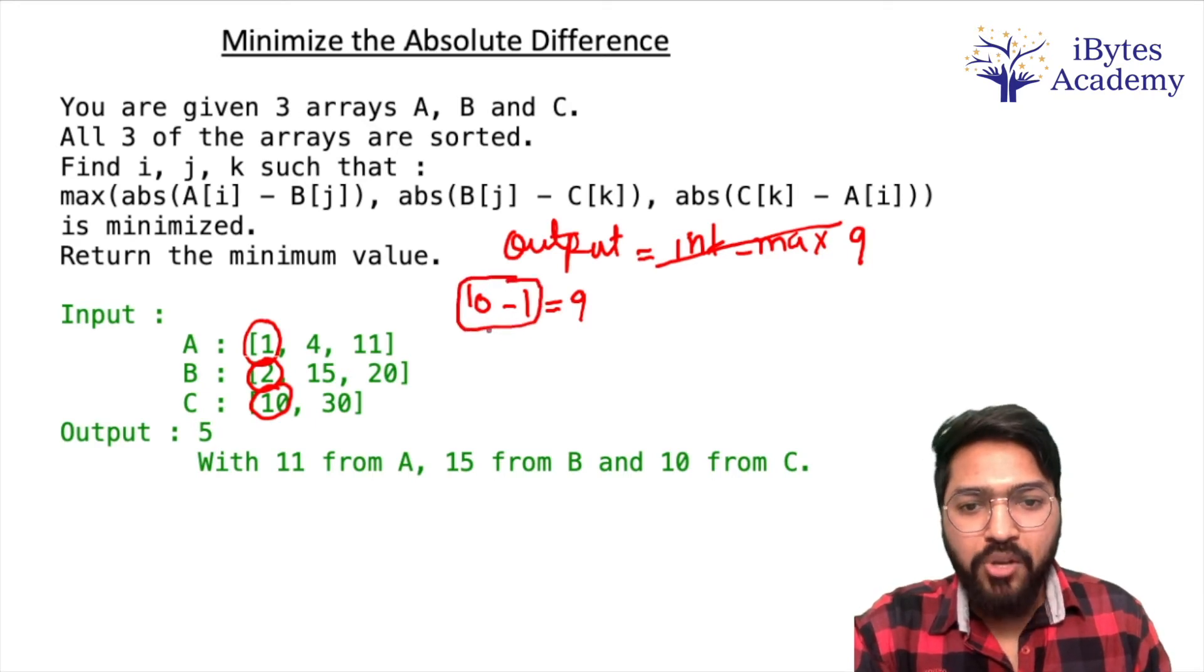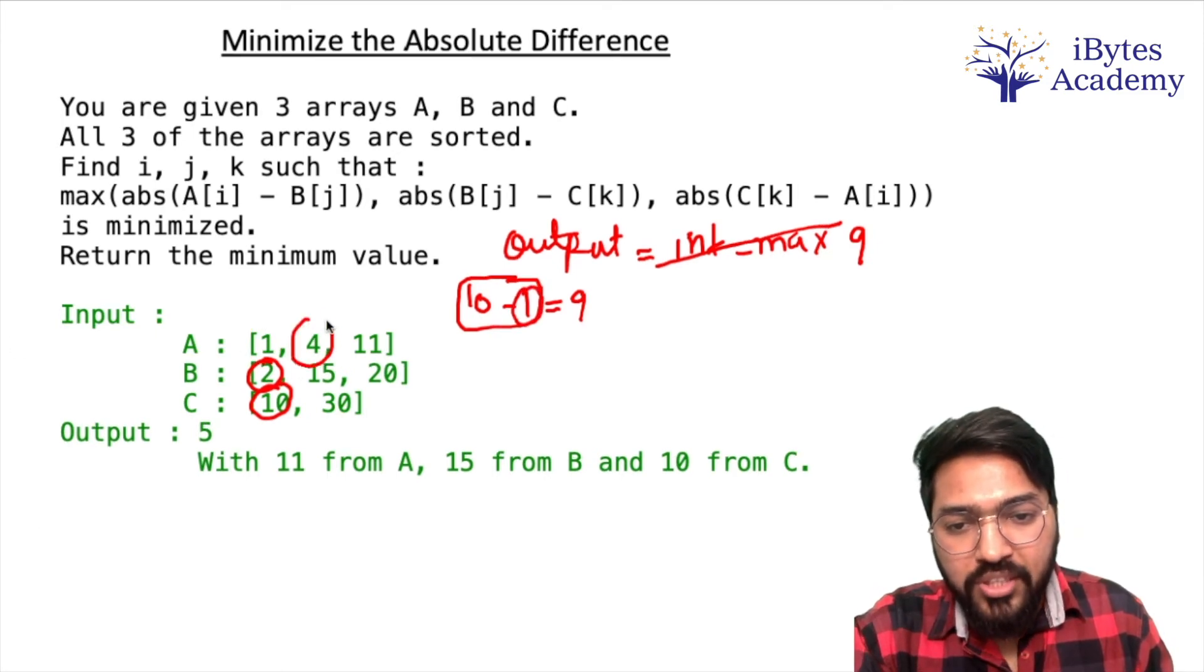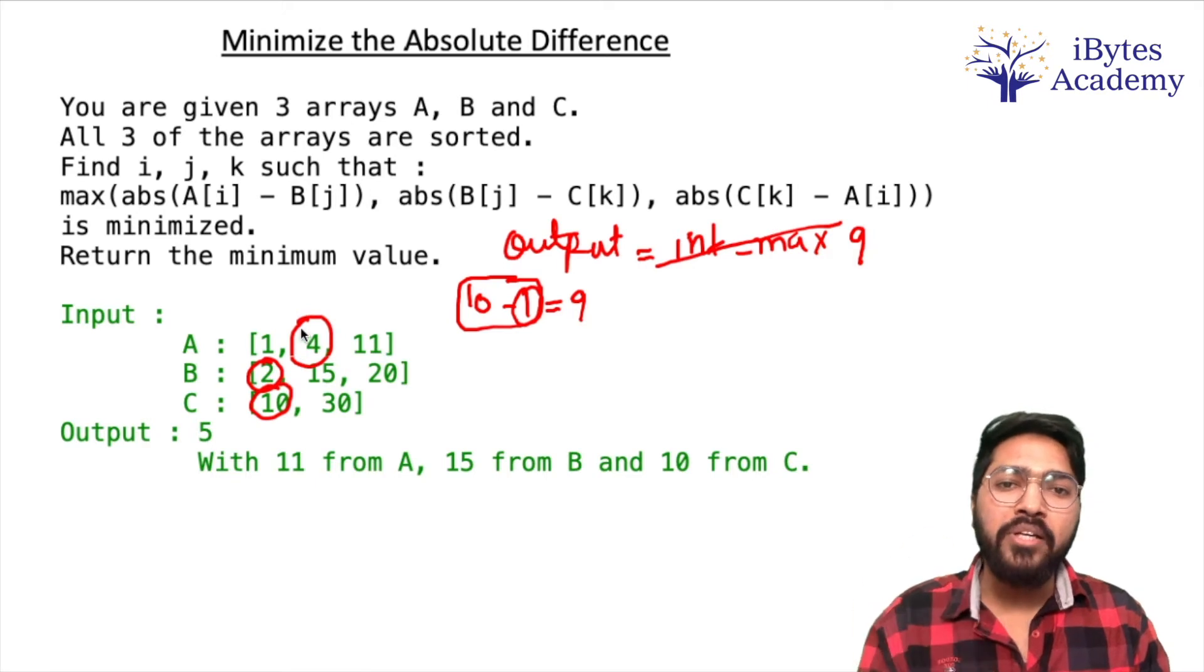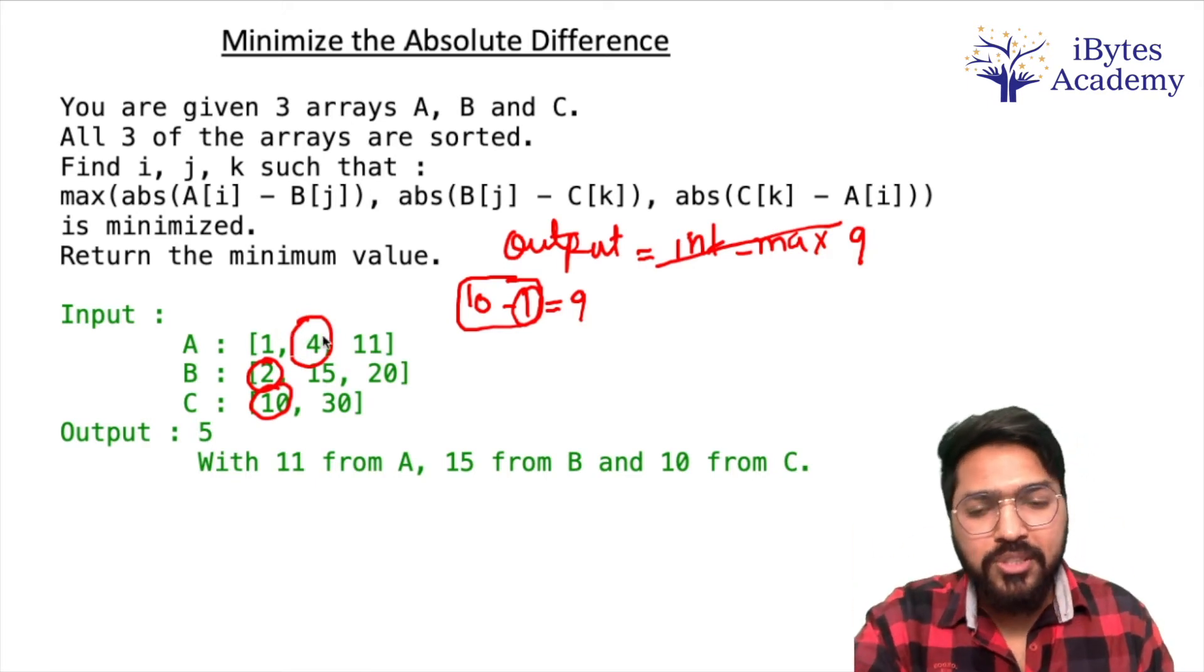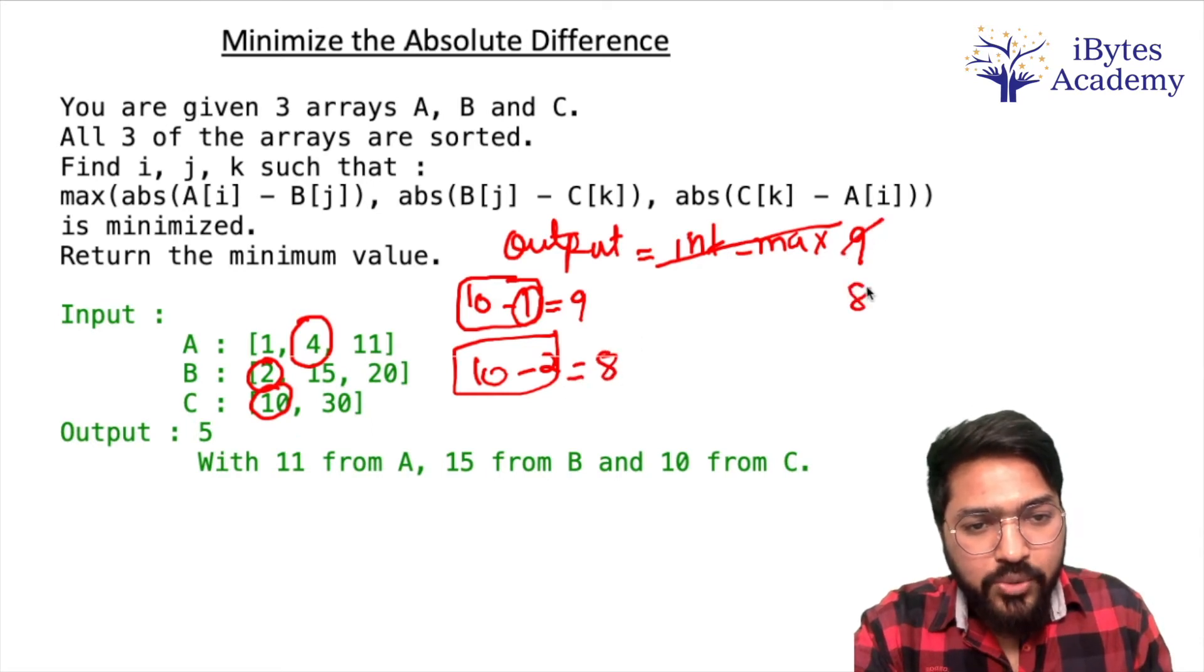So I will just move to 4 as per the new triplet: 4, 2, and 10. So 10 is the maximum, 2 is the minimum. So 10 minus 2 equals 8. So this will update to 8.